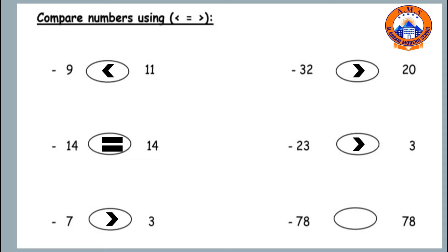And the last one is seventy-eight and seventy-eight. Here we have two same numbers, so seventy-eight is equal to seventy-eight.